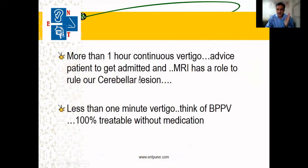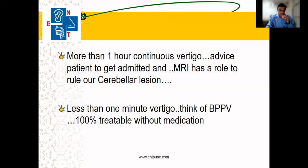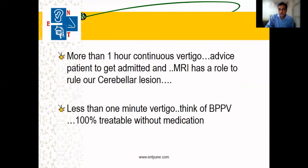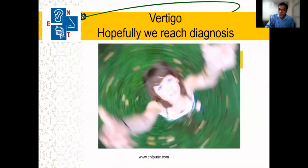One take-home message: more than one hour of continuous vertigo warrants an MRI to rule out a brain or cerebellar lesion. If the vertigo lasts only a few seconds — less than one minute — and only in specific postures, BPPV is the common cause and it is 100% treatable with an exercise maneuver without any medication.